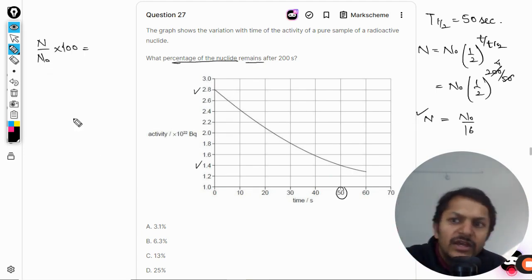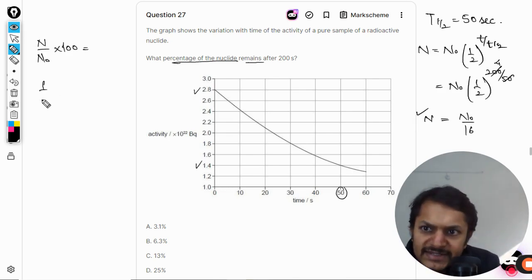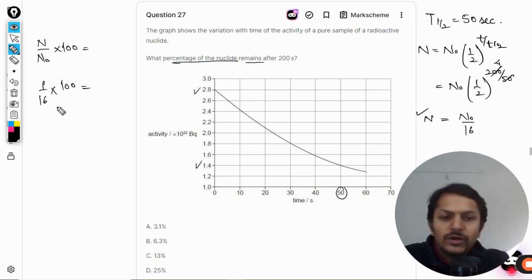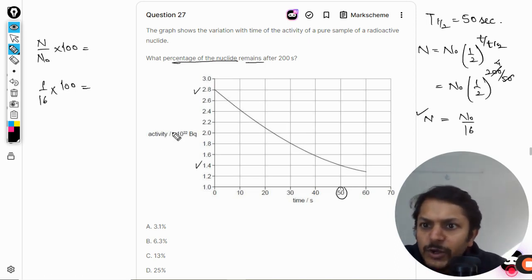This is our answer. So N by N naught is 1 by 16. So 1 by 16 multiply by 100. This is what we want to find. And with the help of a calculator, we are getting it to be 6.25.